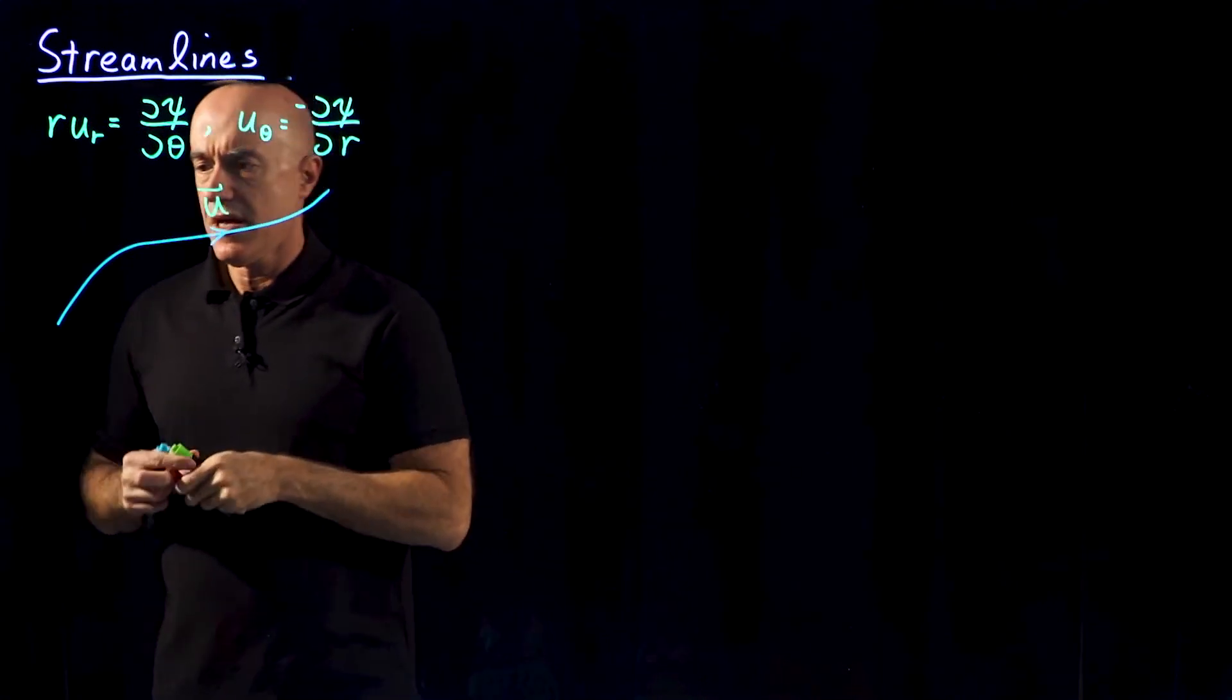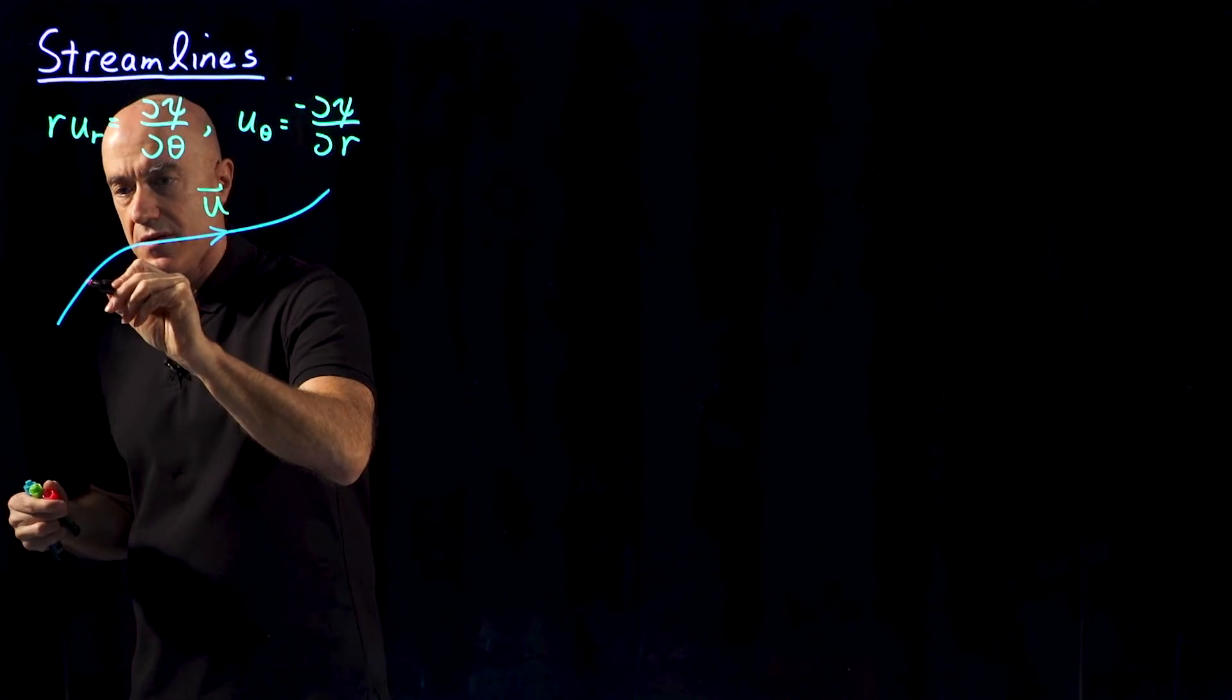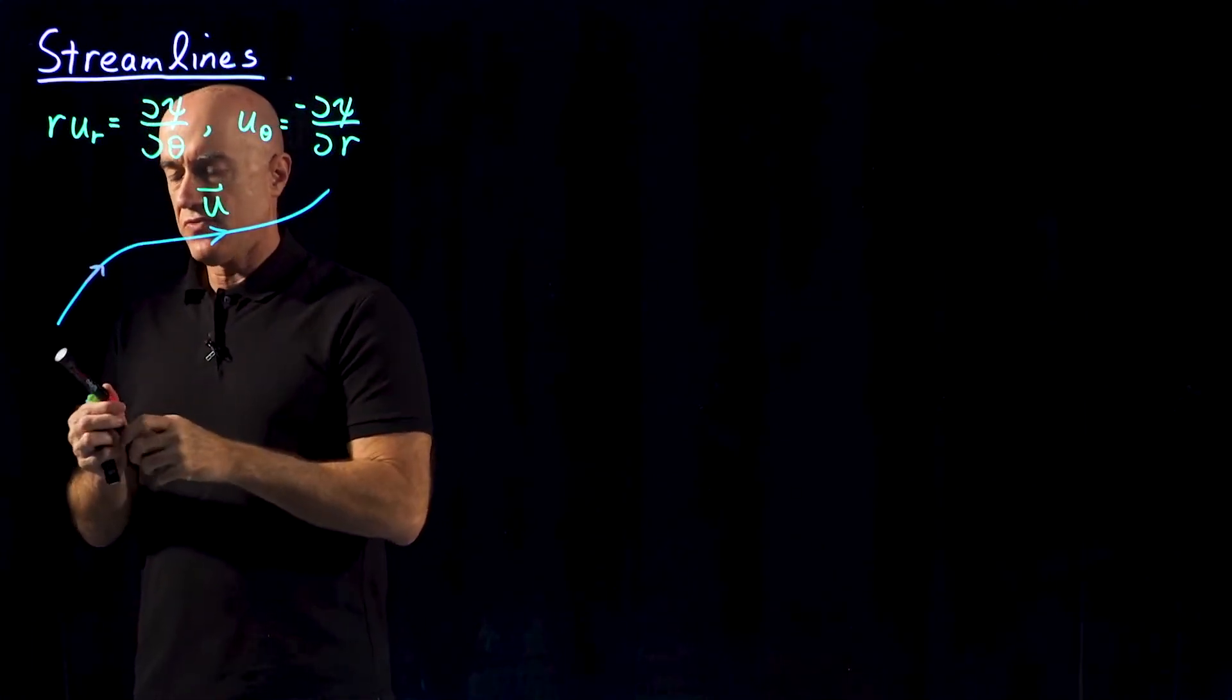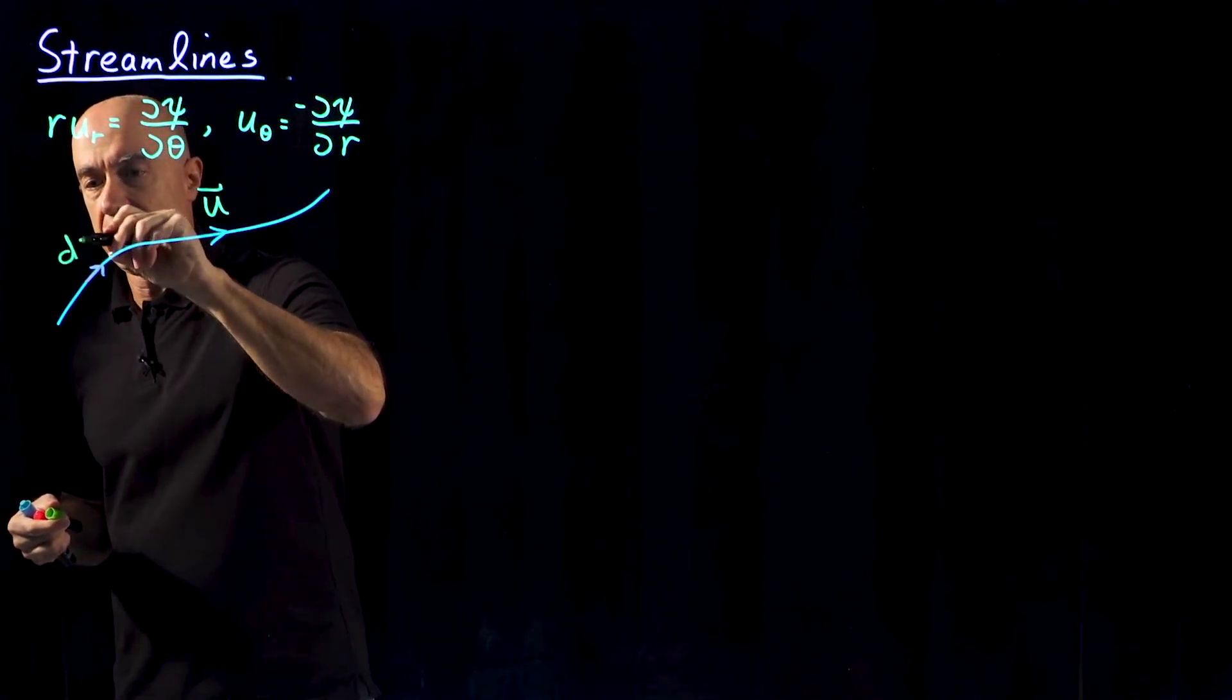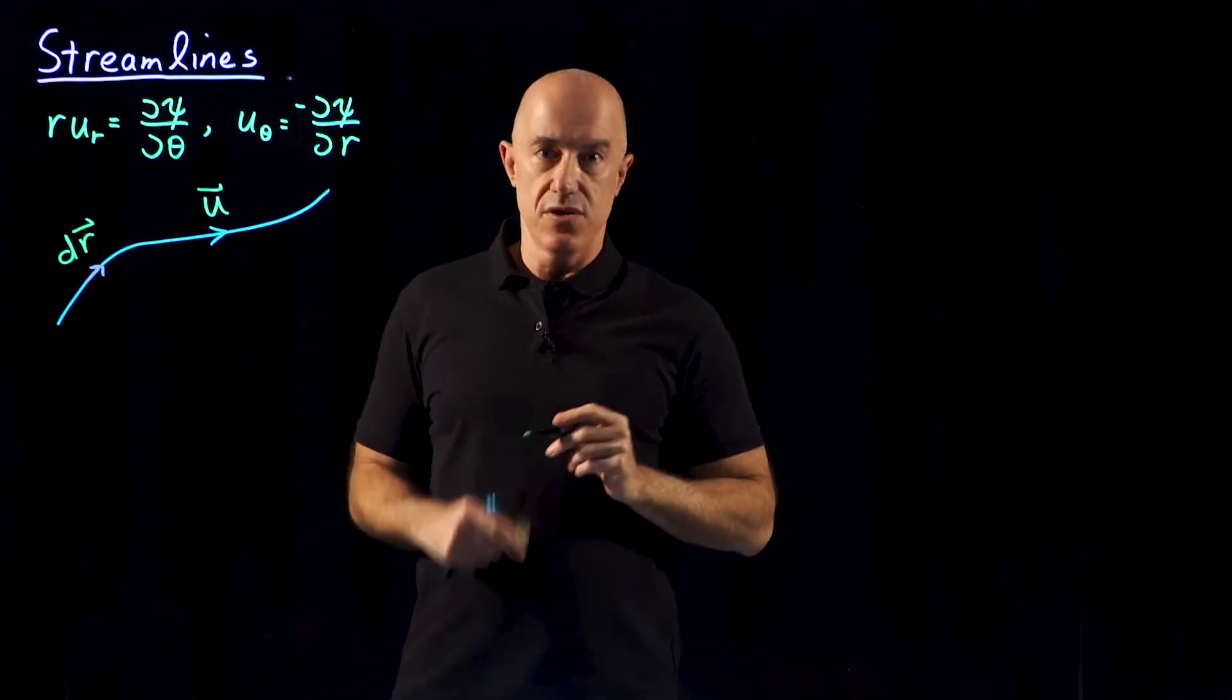Now if we draw a vector along this streamline, let me draw an infinitesimal vector, so this will be our infinitesimal vector, which I'll call dr. So dr then is along u.